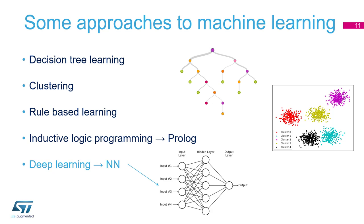For decision tree learning — we have the picture here so it's quite clear. Based on the dataset you have, you extract some features, and then the machine transfers it into a decision tree: if, then, else, and so on. The second technique is clustering — putting all the data into clusters and then finding the areas where these clusters are to predict the next result. This method is based on statistics and mathematics.